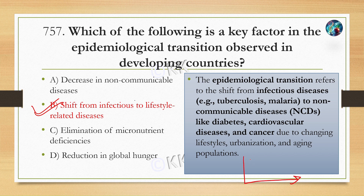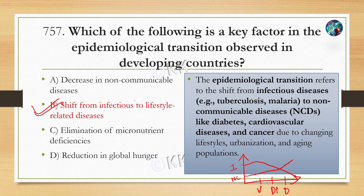Epidemiological transition means that as a country moves from underdeveloped to developing, and then to developed status, the disease pattern also transitions. In underdeveloped and developing nations, infectious diseases like tuberculosis and malaria are more common. In developed nations, non-communicable diseases such as diabetes, cardiovascular diseases, and cancer are more prevalent — due to changes in lifestyle, urbanization, aging population, and improvements in health infrastructure and sanitation.